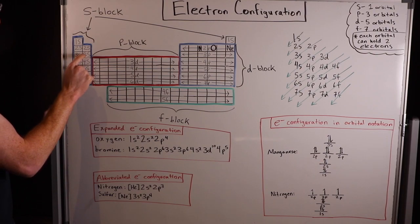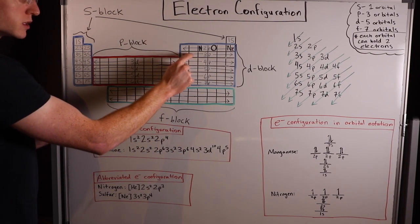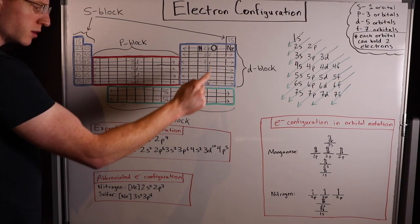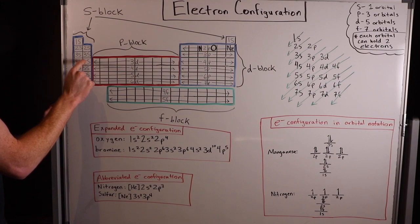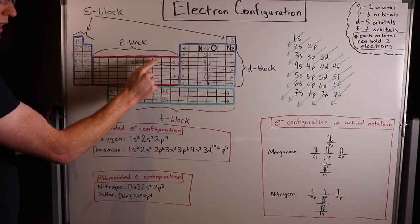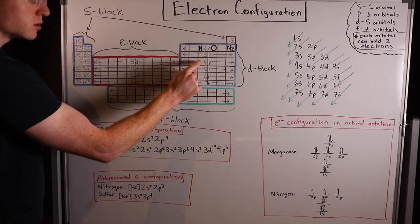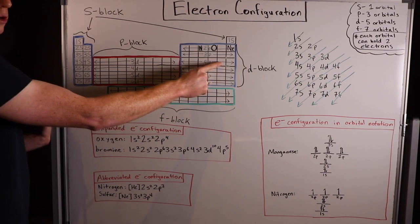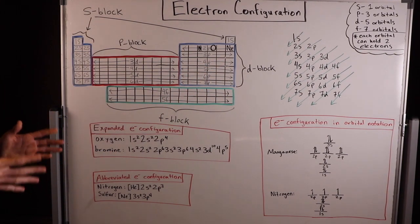Then 3s2, so 1, 2. Then 3p6, so we filled in 1, 2, 3, 4, 5, 6 of those. 4s2, 2 of those. 3d10, all 1 through 10 of those. And then 4p5, 1, 2, 3, 4, 5. So bromine is right there. That is bromine's expanded electron configuration.